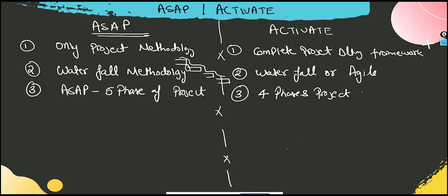Activate says that it would be starting from your project, so ASAP is a four phases project. So the first phase is actually your prepare, then explore, realize, deploy. These are the four phases which Activate says that it would be there.